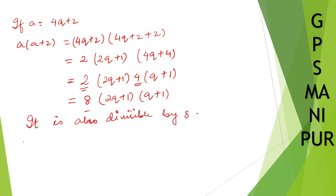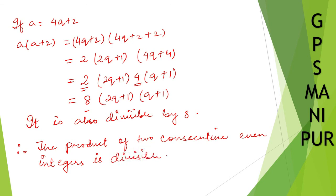Therefore, we can conclude the product of two consecutive even integers is divisible by 8. Thank you so much, we'll meet in the next video.